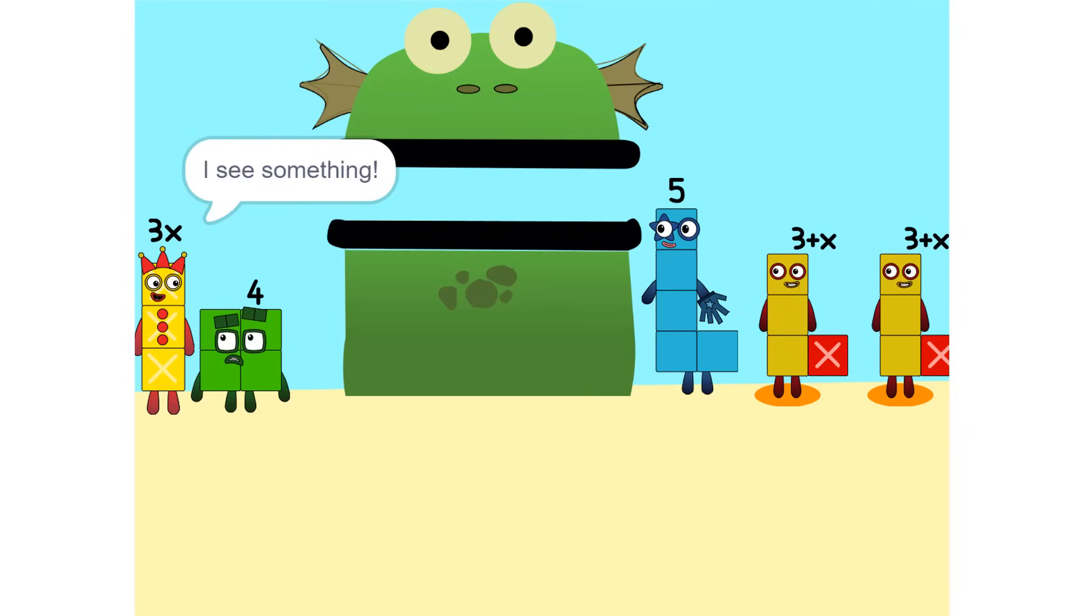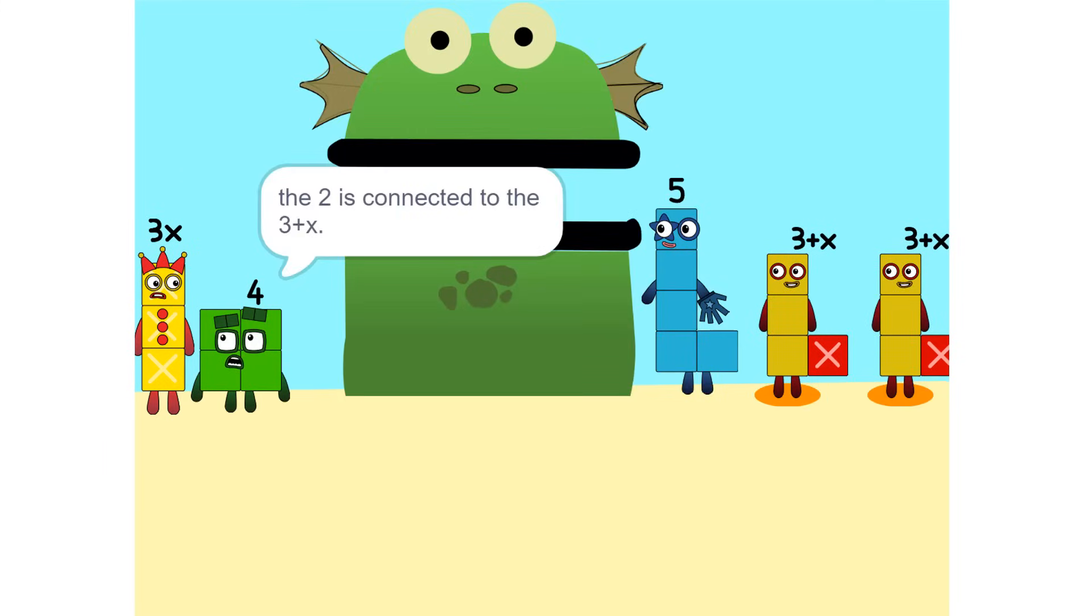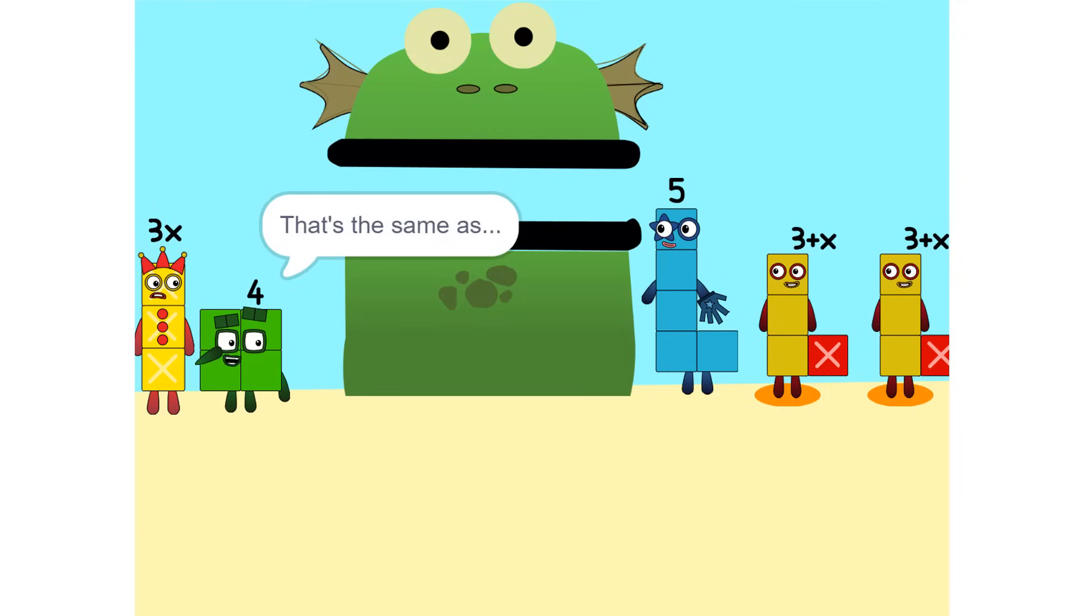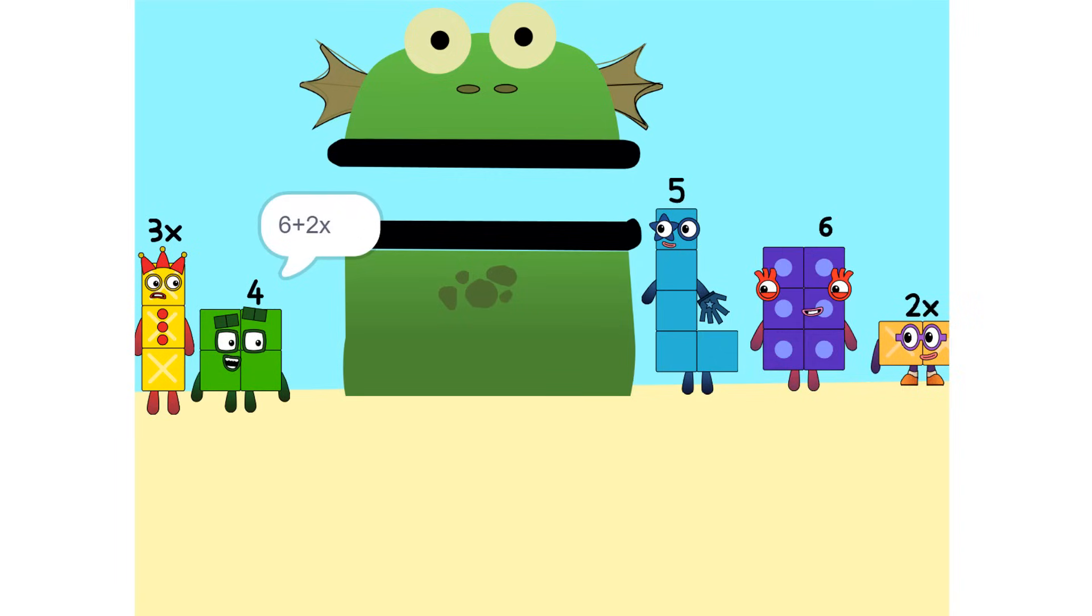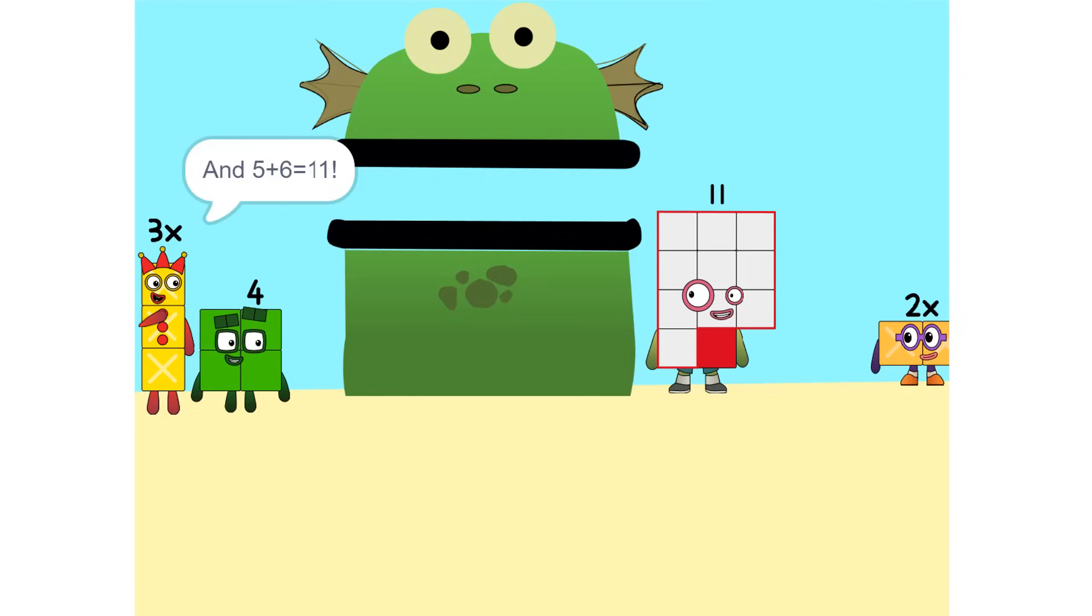I see something. We can add these. Why did that happen? Because the 2 is connected to the 3 plus x. It's like adding apples and oranges. You can't. So what do we do?